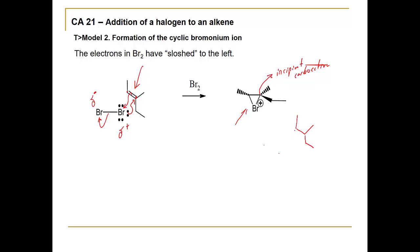We can show the bromonium ion going away from us — drawing the bromine with a positive charge going back — or equally, it's possible to have the bromine coming up at us, so either way is fine. It's important to consider that both can happen, so going forward we'll often represent the bromonium ion in these two ways.